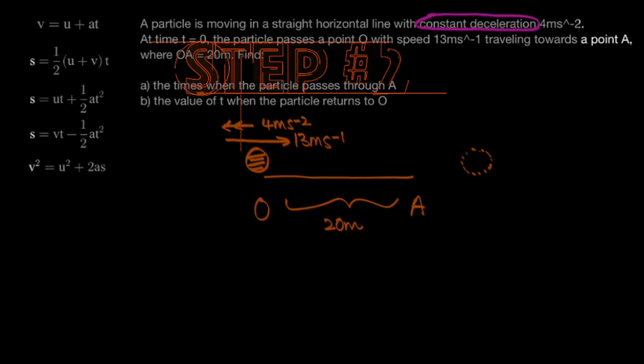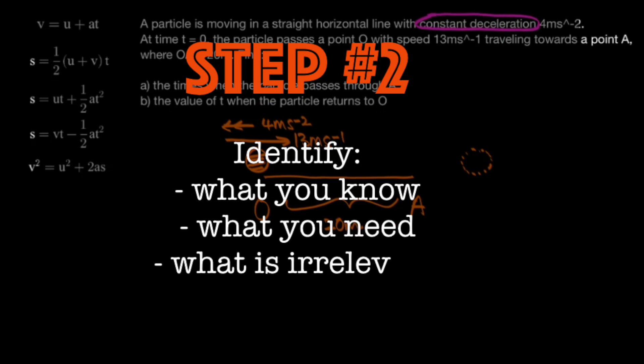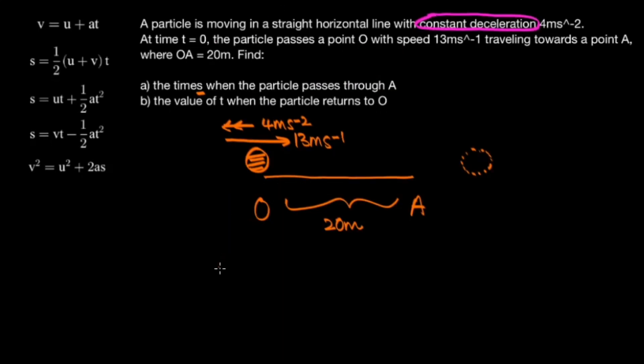So this brings us to step 2, which is to identify which of the SUVAT variables we're given, which variable do we have to work out, and which variable isn't relevant to the question. Well let's start by writing the acronym SUVAT across the page.